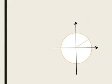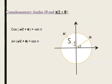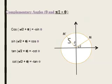Now, pi over 2 plus alpha, which is the second region where only the sine is positive. Cosine of (pi over 2 plus alpha) equals minus sine alpha, and sine of (pi over 2 plus alpha) equals cosine alpha. Tangent of (pi over 2 plus alpha) equals minus cotangent alpha, and cotangent of (pi over 2 plus alpha) equals minus tangent alpha.